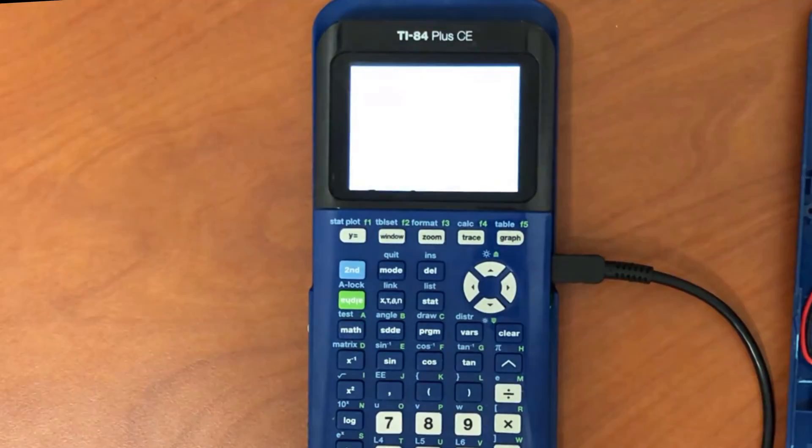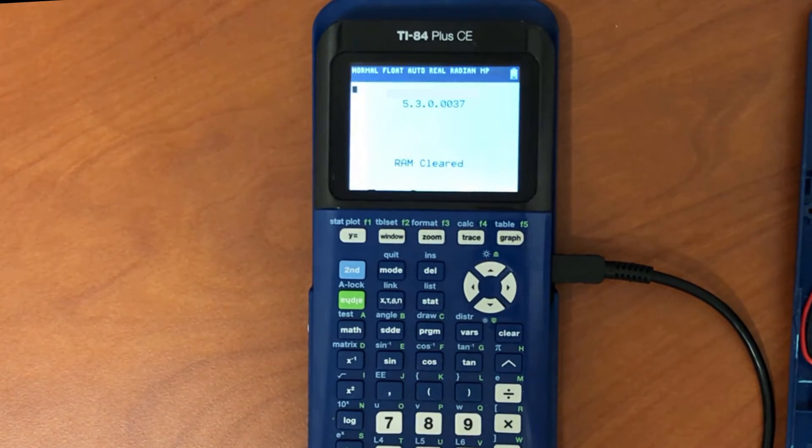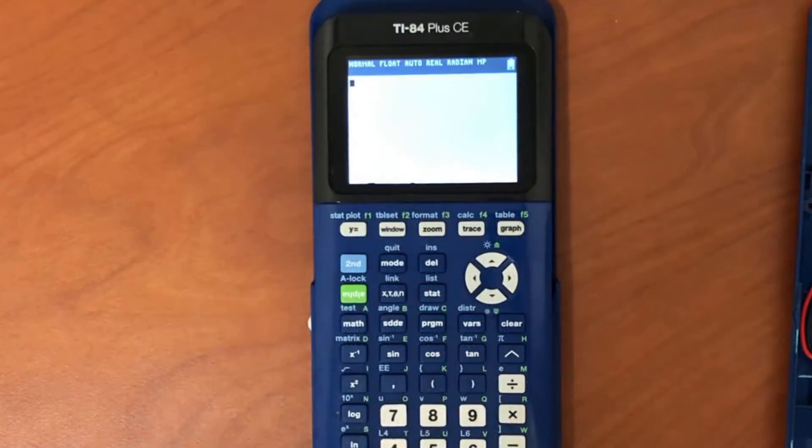Once it's finished, voila! You're now downgraded from OS 5.6.0 and can run assembly programs without the need for a jailbreak.